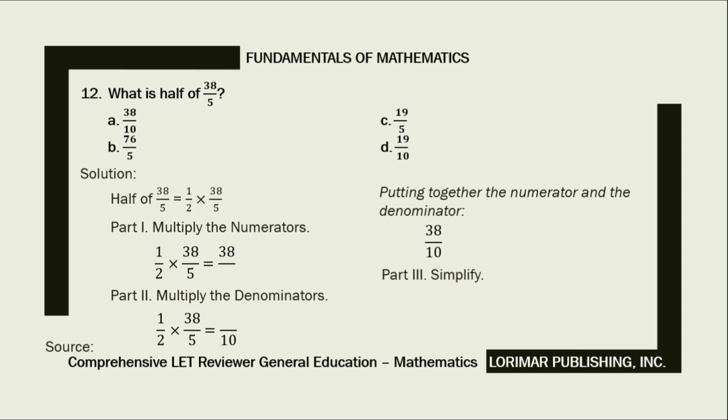Next, let's simplify our answer. We need to find the greatest common factor to our numerator and our denominator, and that is 2. Then divide the numerator and denominator by 2. 38 divided by 2 equals 19. 10 divided by 2 equals 5.